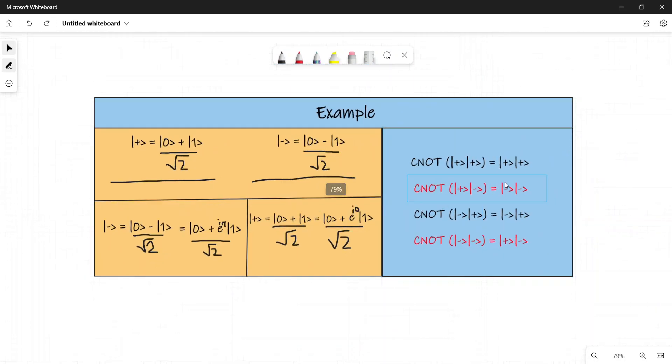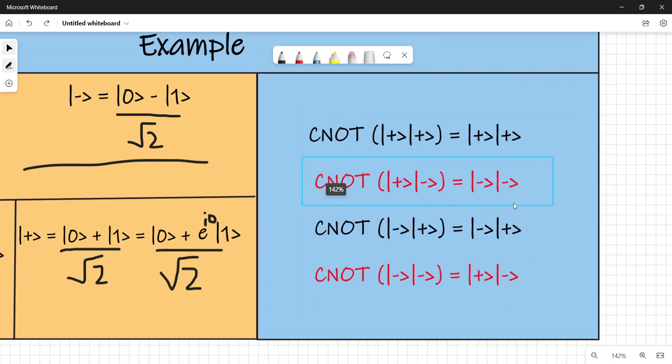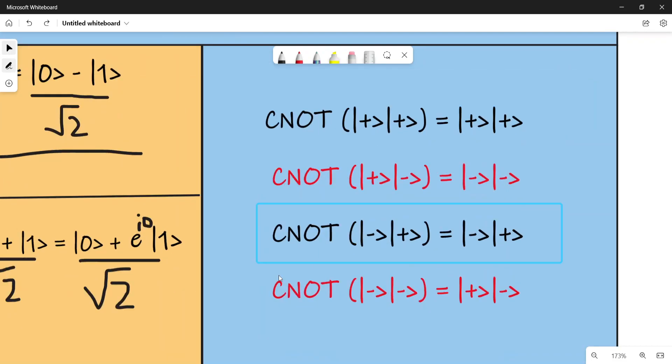If you have done some basic quantum computing, I'm sure you know what a CNOT gate is. Consider these different operations. The CNOT gate is a two-qubit gate. There are two qubits: the control qubit and the target qubit.